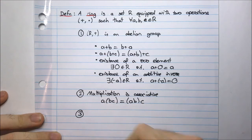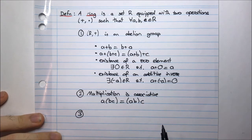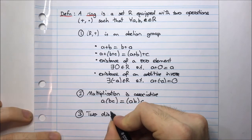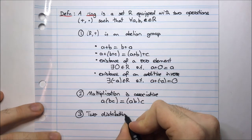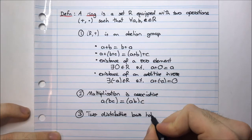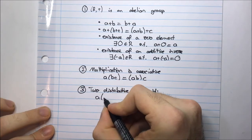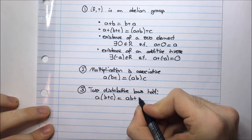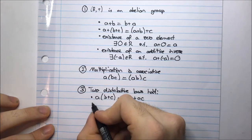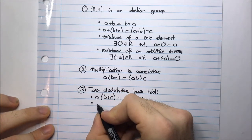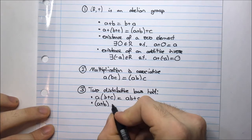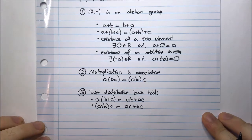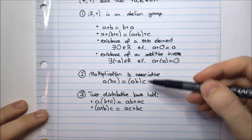We also have our final condition: the two distributive laws must hold. The first distributive law is A multiplied by B plus C equals AB plus AC. The second is A plus B multiplied by C equals AC plus BC. These are the conditions — this is the definition of a ring.